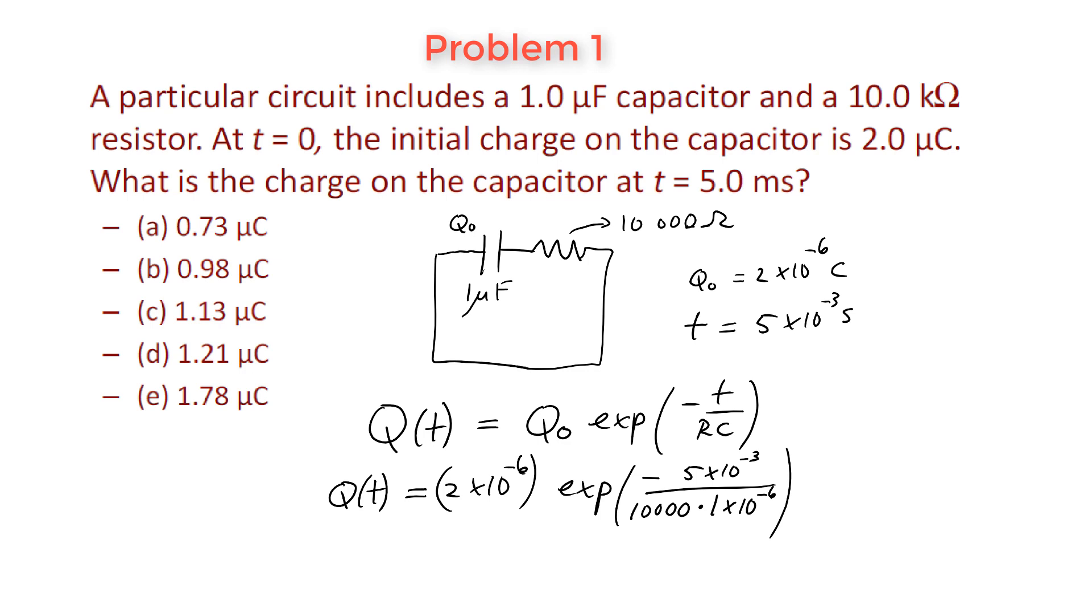Okay, if you substitute everything inside your calculator, what you're going to find is that the charge at this time is simply 1.21 micro coulombs, ten to the minus six coulombs. So the correct answer for this problem here is choice D. Okay, pretty straightforward.